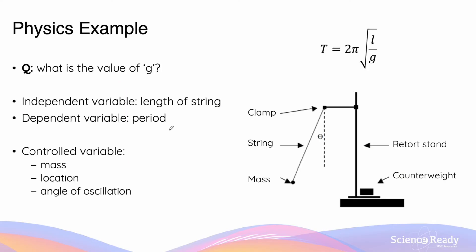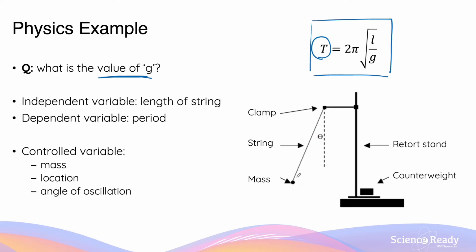Now let's use a physics example. I'm using a simple pendulum system — a mass attached via a string to a clamp and retort stand — to determine the value of gravitational acceleration g on the surface of Earth. The oscillation of the mass is due to gravity, and we have an accepted equation relating the period of oscillation (the time for the mass to go back and forth once) to the length of the pendulum string and the value of g.